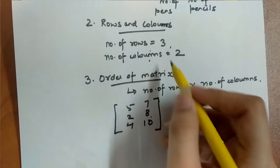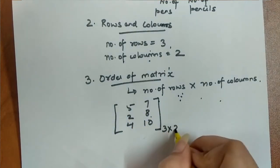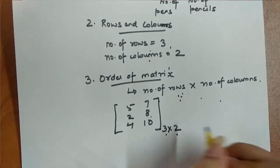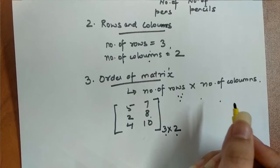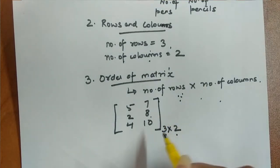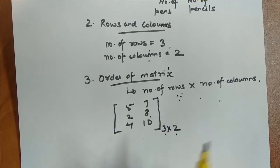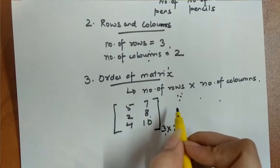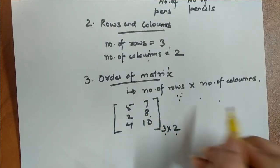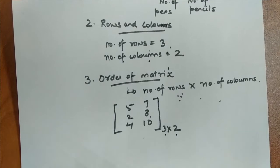Looking at the matrix, we count the number of rows — that is 3 — and the number of columns — that is 2. So the order of this matrix is 3 cross 2. When I say order of matrix is number of rows cross number of columns, this does not mean we multiply them. We don't write that the order is 6. We always use the notation: number of rows cross number of columns. This is just for general representation — we do not actually multiply.